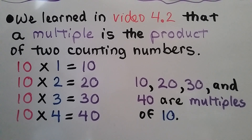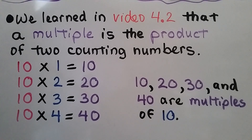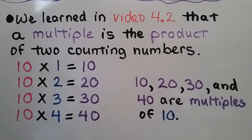We learned in video 4.2, back in chapter 4, that a multiple is the product of two counting numbers. We have 10 times 1 equals 10, 10 times 2 equals 20, 10 times 3 equals 30, 10 times 4 equals 40, and 10, 20, 30, 40 are multiples of 10. We could keep going all the way up to 10 times 9 equals 90. Those are all multiples of 10.